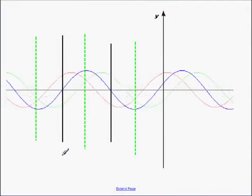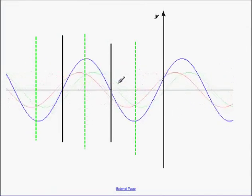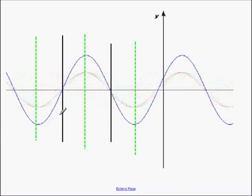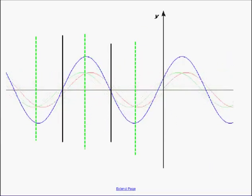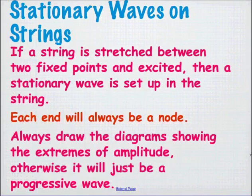Here's a diagram of the motion — the green and red waves are travelling across, and the only wave you're going to see is the blue one, which is the result of the two. If you do the superposition mathematics at each point, you get the blue wave. At the green lines the wave shows maximum displacement, while on the black lines there's no displacement at all. Always draw the diagrams showing the extremes of amplitude — otherwise it's going to look just like a progressive wave.